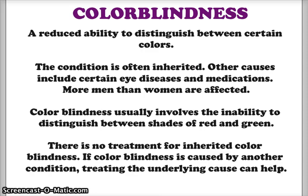Let's look at colorblindness. Colorblindness is a reduced ability to distinguish between colors, and this condition is inherited most of the time from the mother to the son; however, a mother and father can both pass it to a daughter. There are other causes of colorblindness, such as damage to the eye due to disease or medications. Men are affected more than women — we'll see why when we look at the Punnett squares. Colorblindness usually involves the inability to distinguish between reds and greens, but there is also blue-green colorblindness and total colorblindness. There is no treatment for inherited colorblindness.